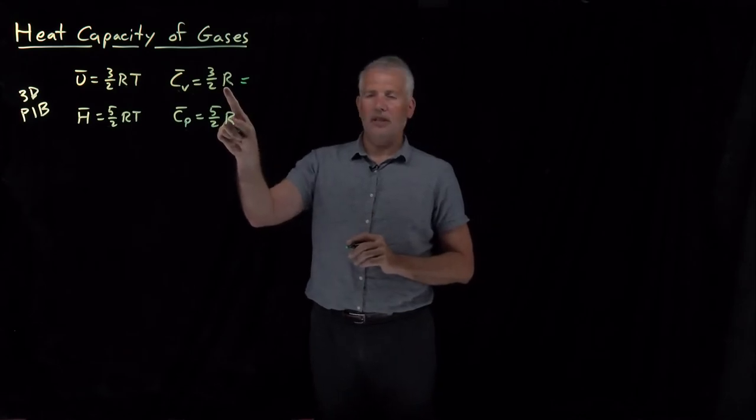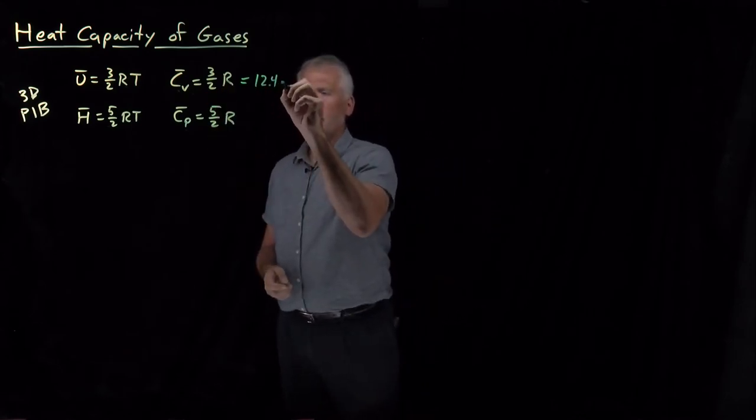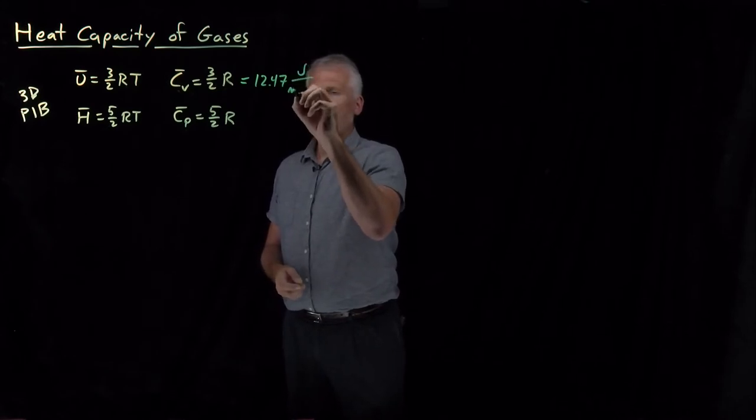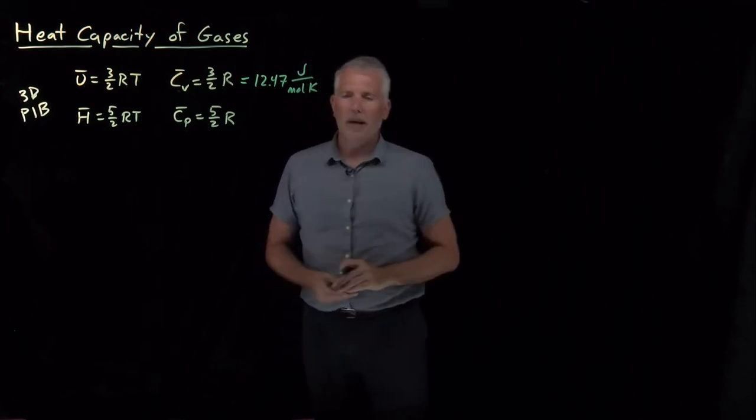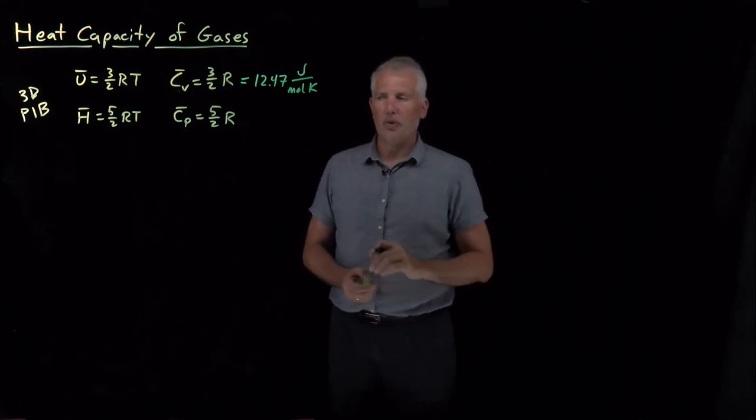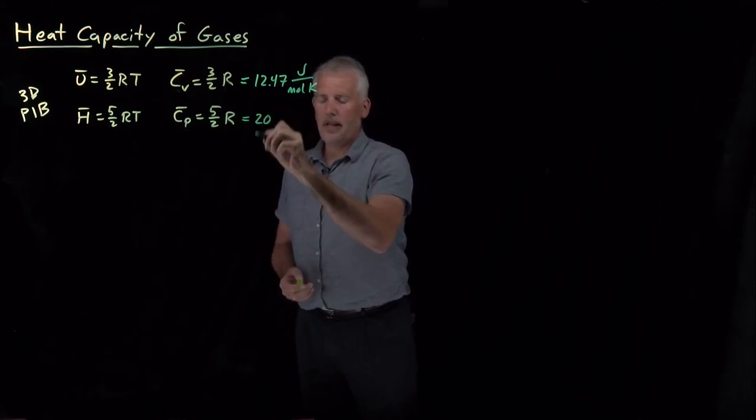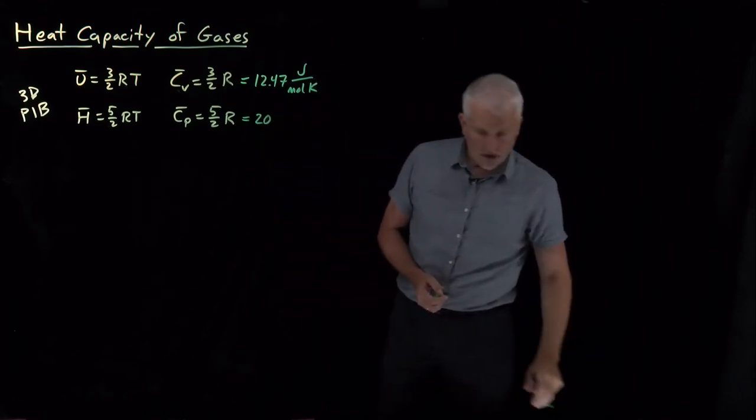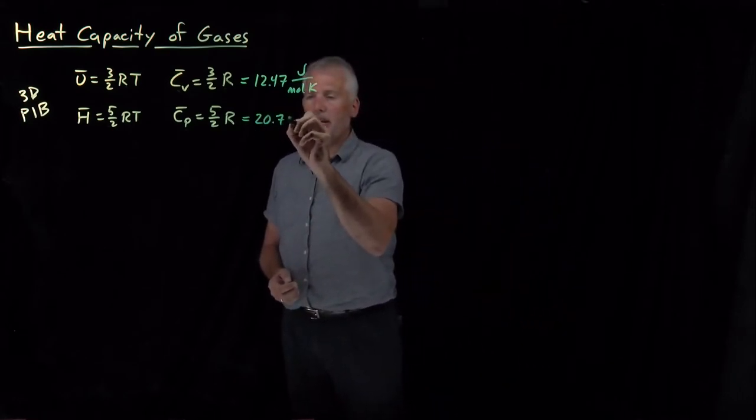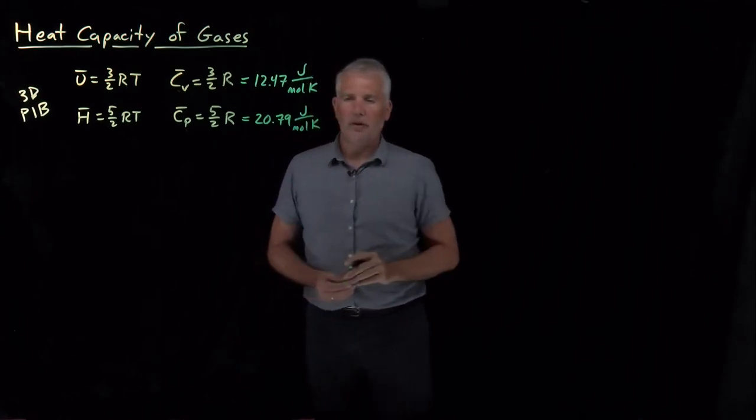If I want a numerical value, if I take the gas constant 8.314 and multiply by 3/2, it predicts that the constant volume heat capacity of every gas is 12.5 joules per mole Kelvin. If I multiply the gas constant by 5/2, that's 20.79 joules per mole Kelvin for the heat capacity.